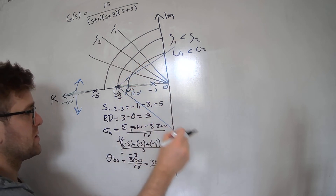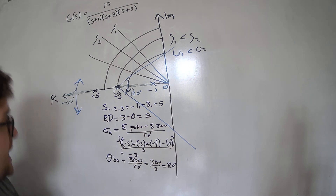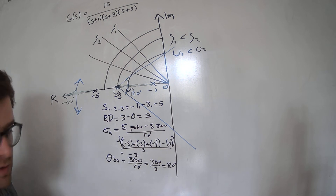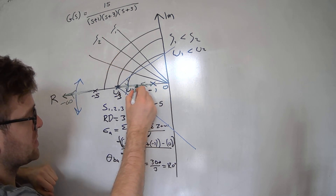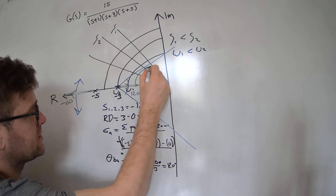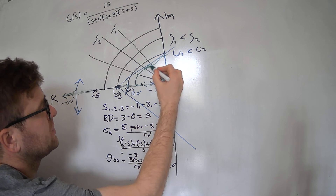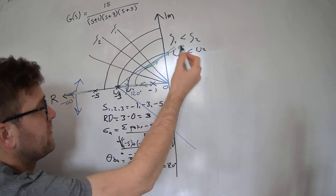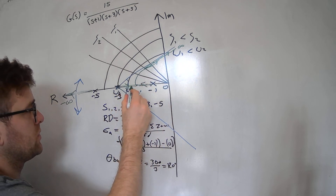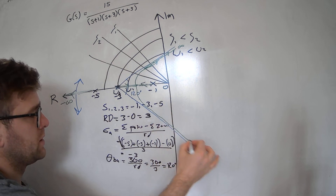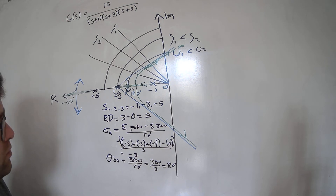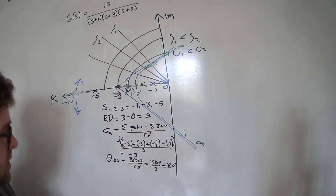Drawing the asymptotes from the centroid at minus three at 120 degrees: as you increase the proportional control gain, one pole breaks away and is attracted to one asymptote, travelling to infinity. Symmetrically about the real axis, the other pole is attracted to the opposite asymptote and runs off to infinity as well.